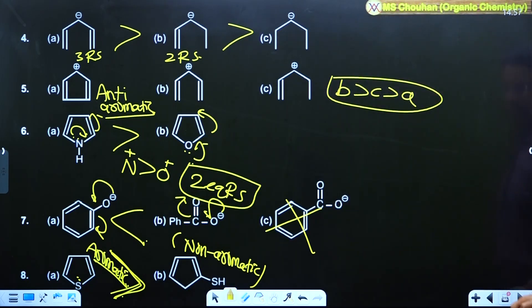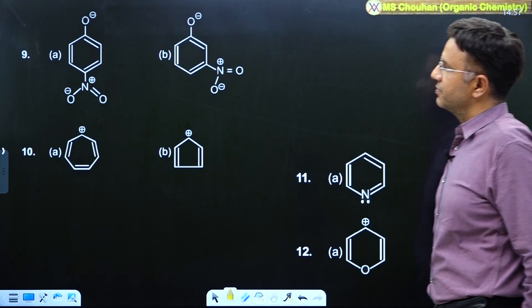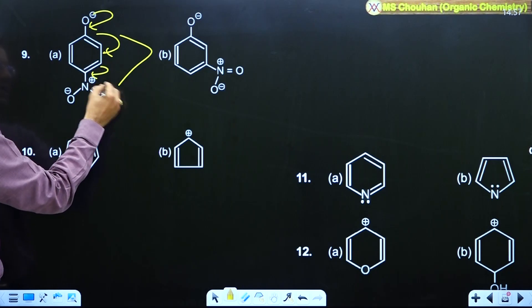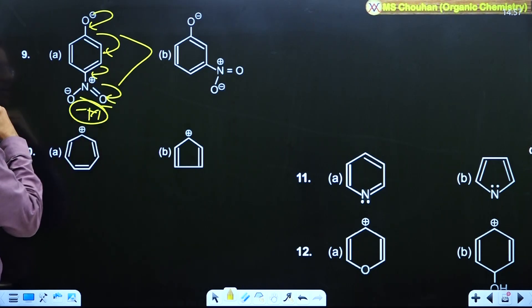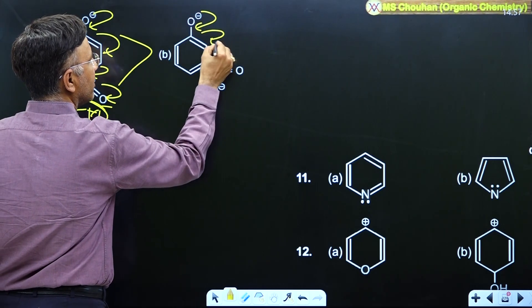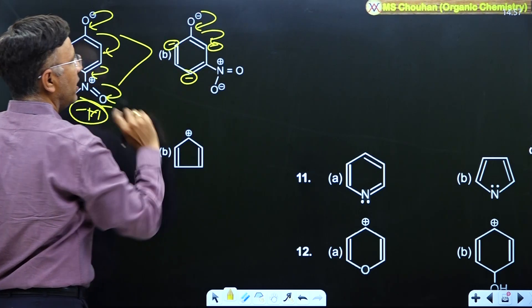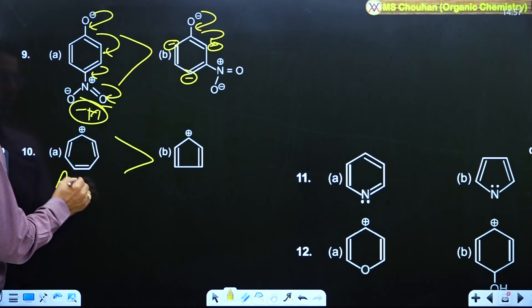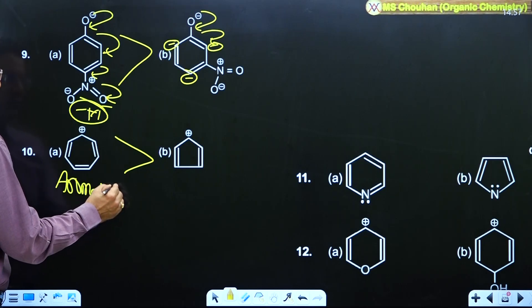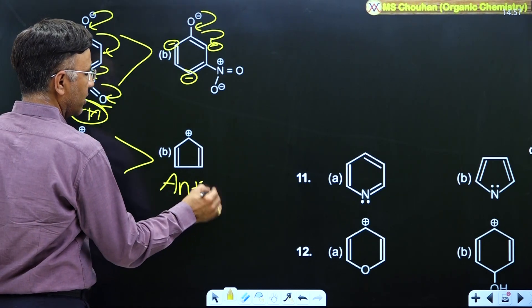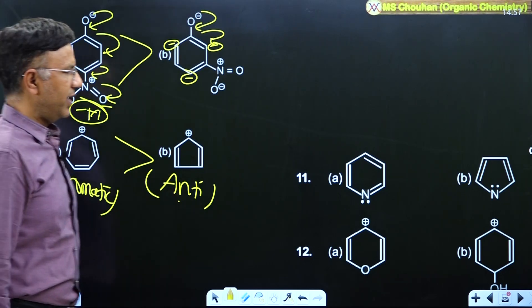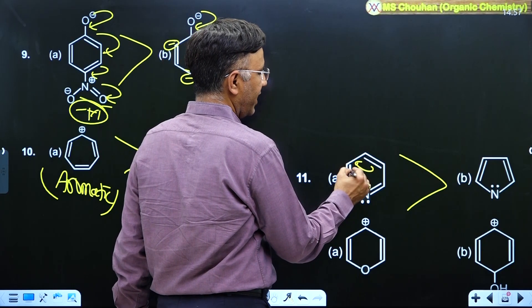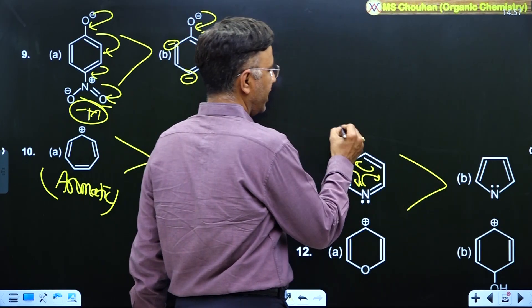In the ninth example, A is greater than B. If the negative charge undergoes delocalization, extra resonance — minus M of NO2 — will operate. In the other case, minus M of NO2 will not operate. In the tenth example, A is greater than B because A is aromatic and B is anti-aromatic. In the eleventh example, A is greater than B — both are aromatic but A has equivalent RS just like benzene, with two equivalent RS.